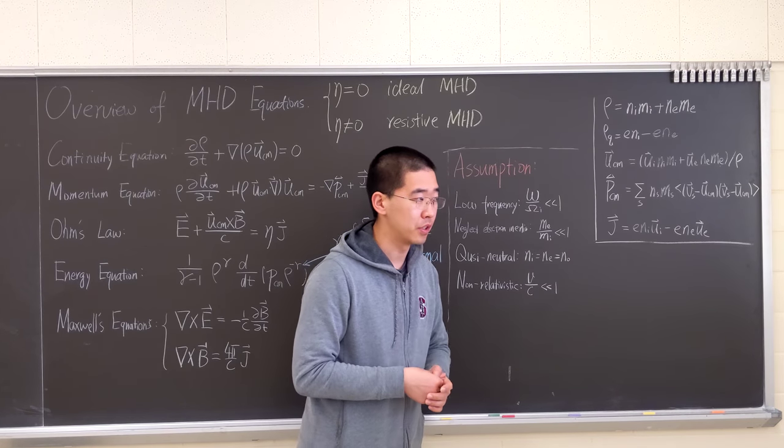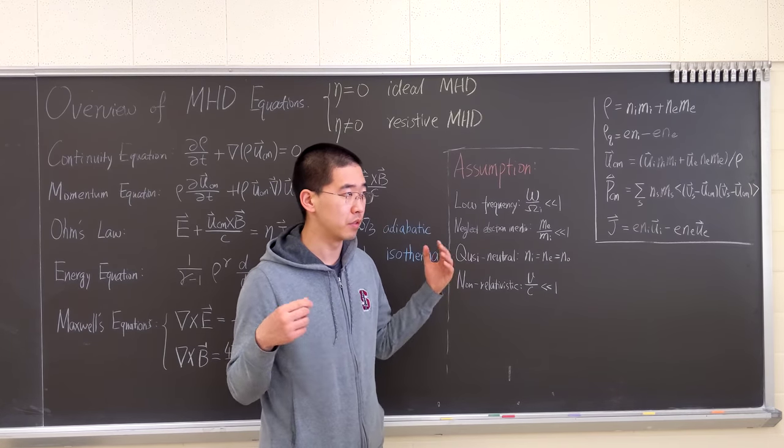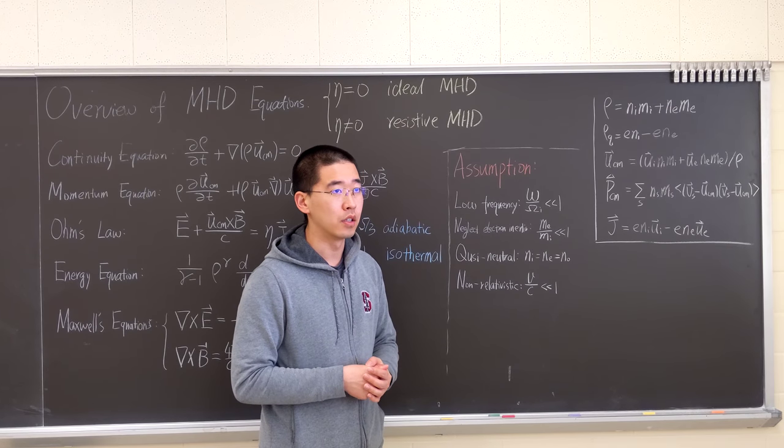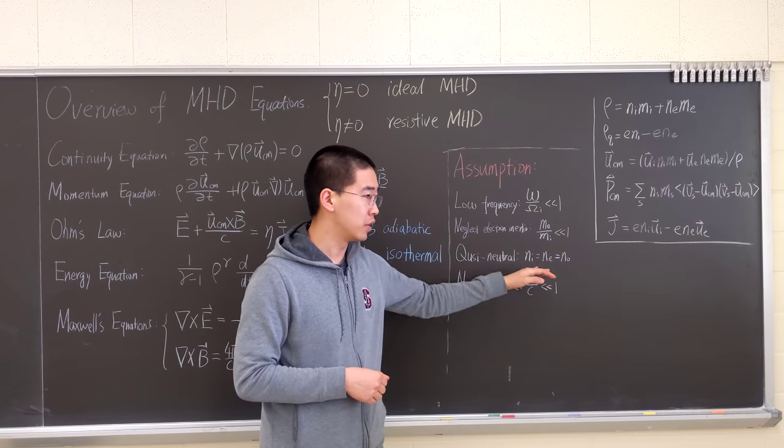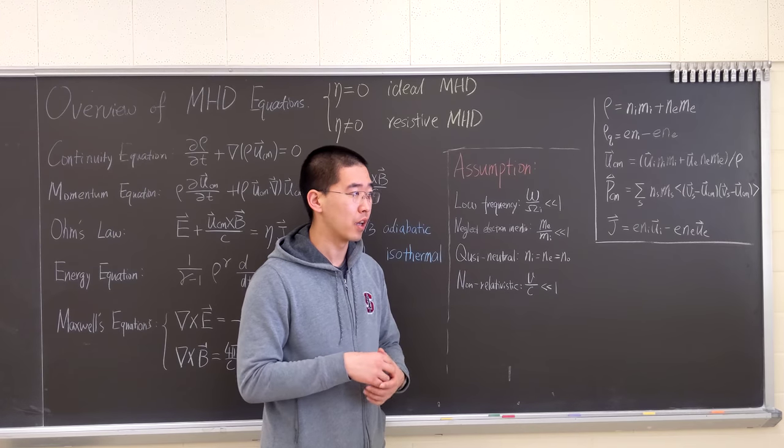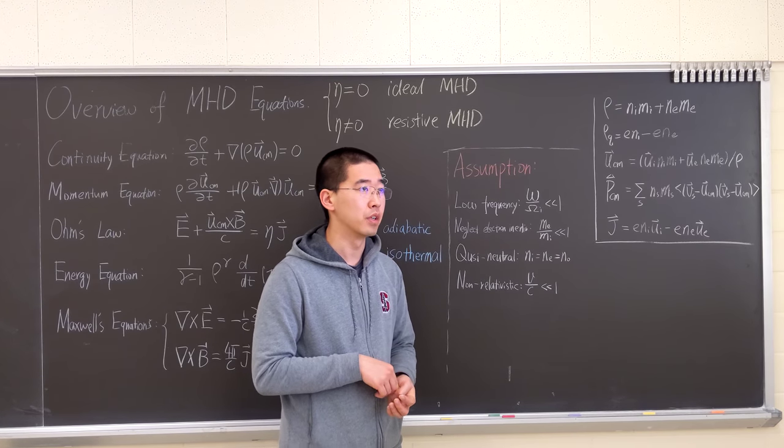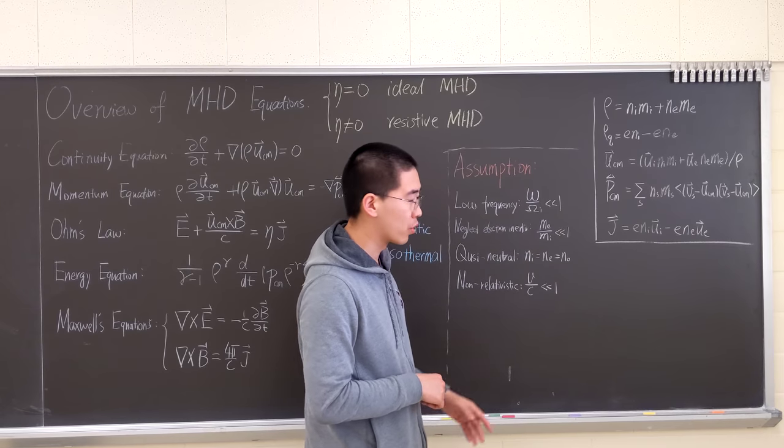And quasi-neutrality, which will be used really often in plasma physics. We think the density of ions and electrons is the same.